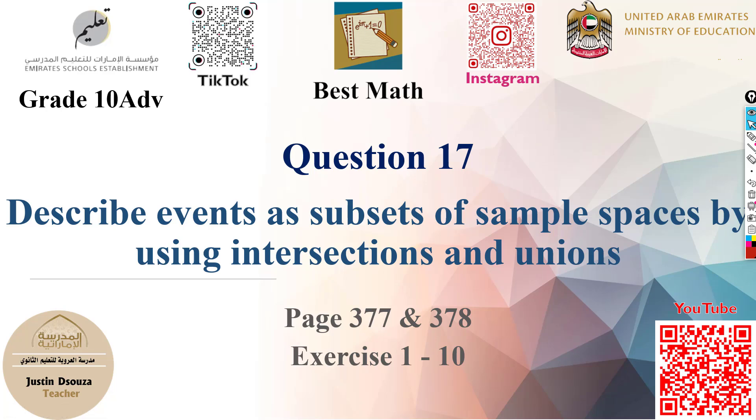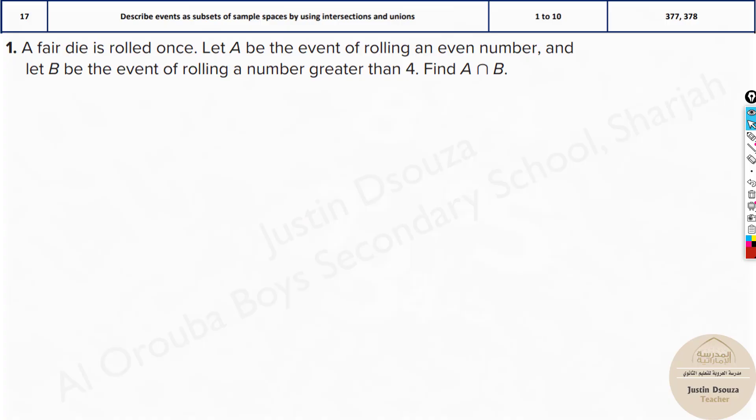Question 17 is to describe sample spaces by intersections and unions. Now let's look into a problem. Here we have a fair die which has been rolled once. Let A be the event of rolling an even number and let B be the event of rolling a number greater than 4. Find A intersection B.